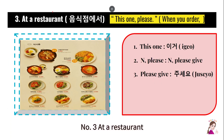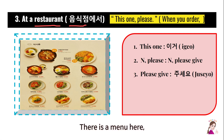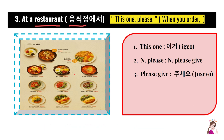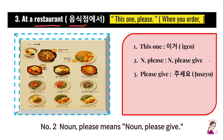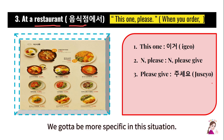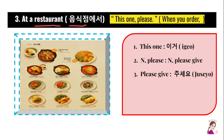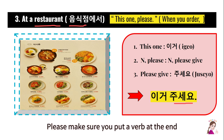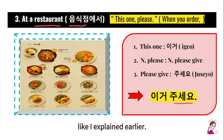Number 3. At a restaurant — 음식점에서. Restaurant means 음식점. There is a menu here, and you want to order by pointing at something and saying 'this one please.' Step 1: 'this one' means 이거. Step 2: 'noun please' means 'noun please give.' Step 3: 'please give' means 주세요. So you can say: 이거 주세요. That means 'this one please.' Please make sure you put the verb at the end — that's the number one rule in Korean.